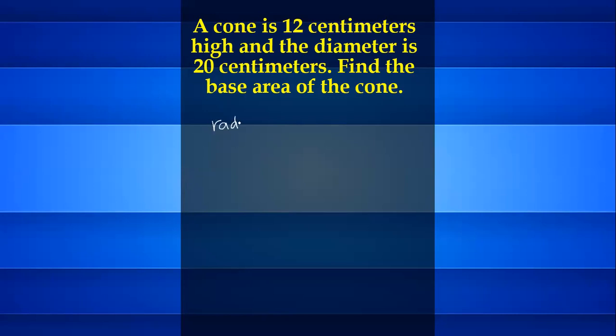Radius is equal to diameter divided by 2. The diameter given here is 20 centimeters, so divided by 2 is equal to 10 centimeters. This is the radius.